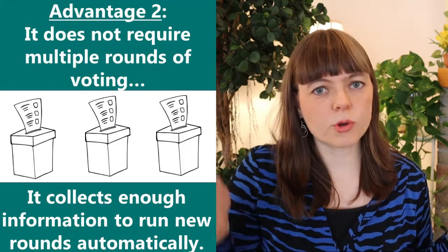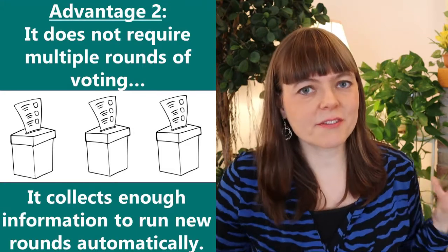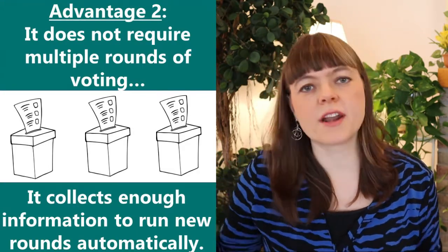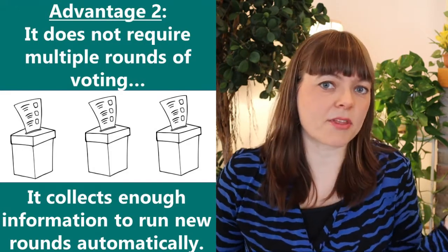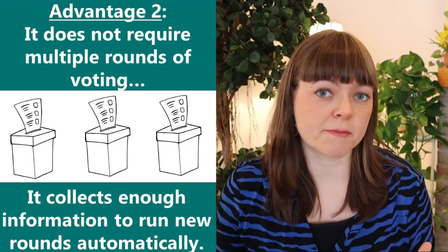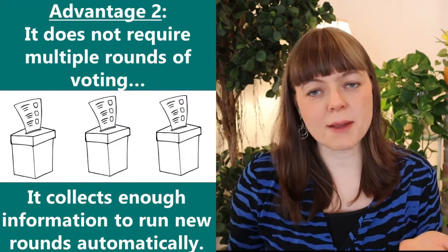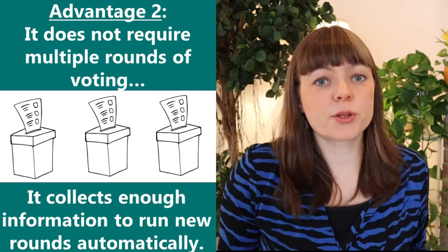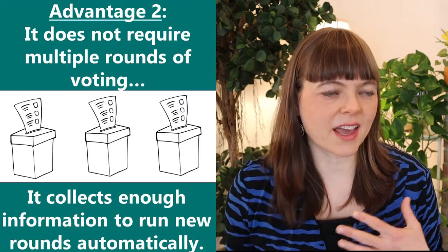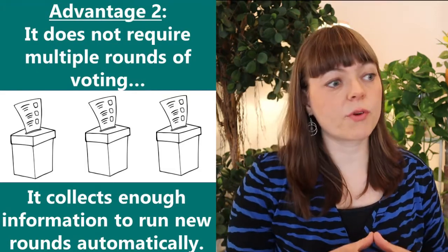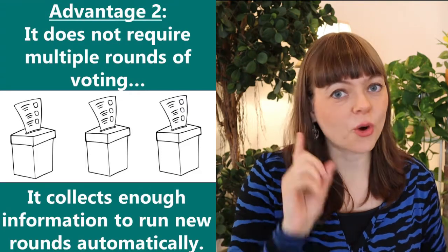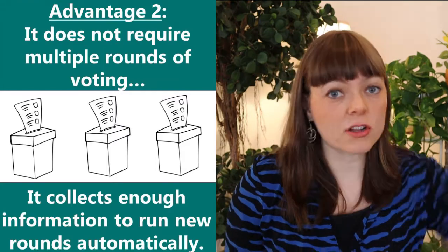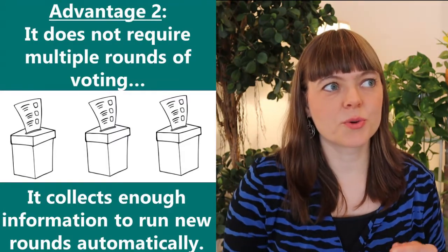A second advantage is that this system doesn't require multiple rounds — you don't have to have multiple elections that people have to show up to separately. We know what happens with a primary followed by a general election: most people only show up to the big election, so the candidates on that ballot come from the small group who showed up to the primary. That group tends to be more radical and less representative of the general population. If we want everybody participating in all moments of the voting process, there should be only one time people have to show up, collecting all the information needed for the full runoff.